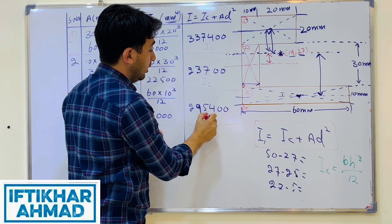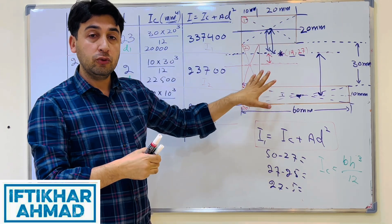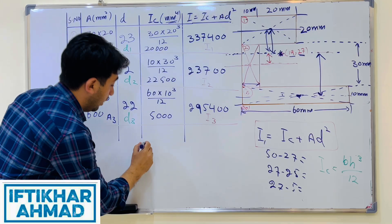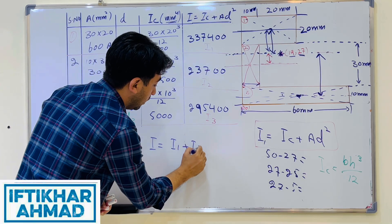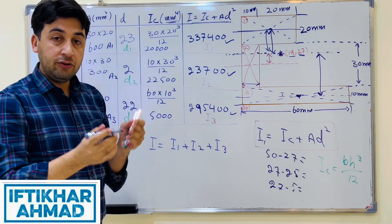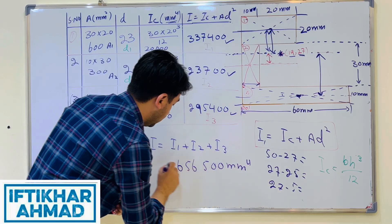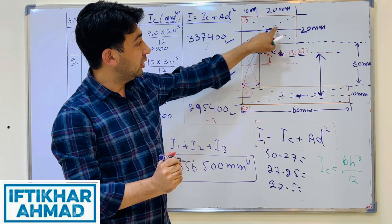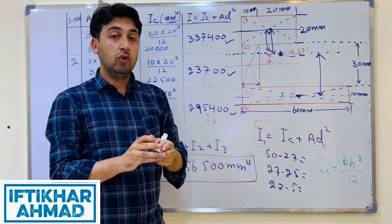Now we have I1, I2, and I3. The total moment of inertia of the composite shape about the horizontal centroidal axis is I = I1 + I2 + I3 = 337,400 + 23,700 + 295,400 = 656,500 mm⁴.